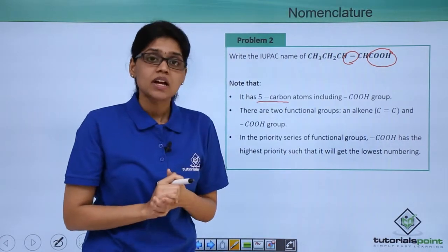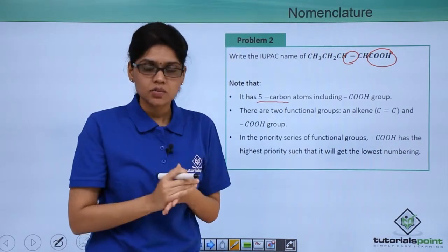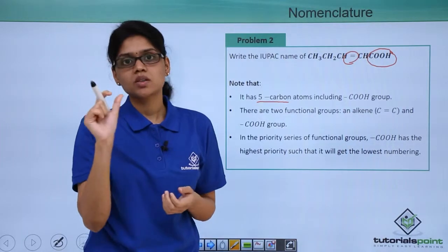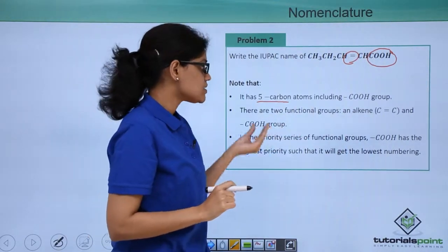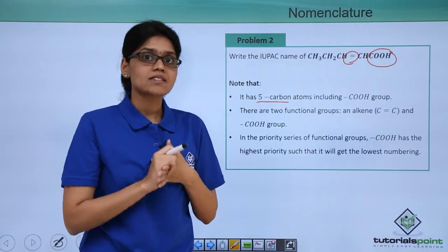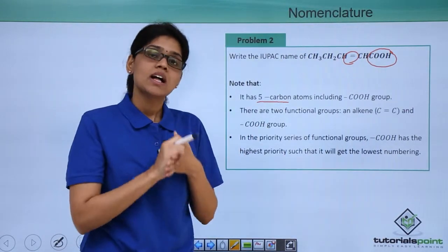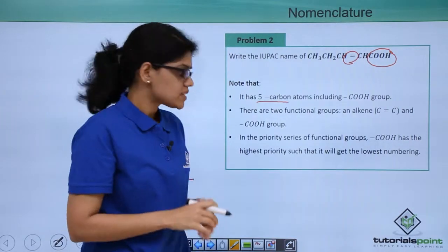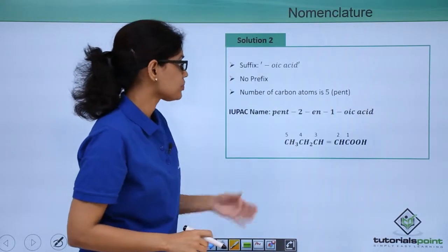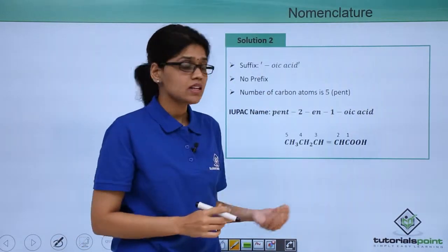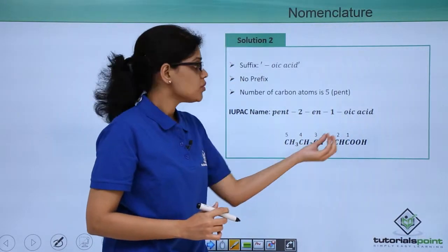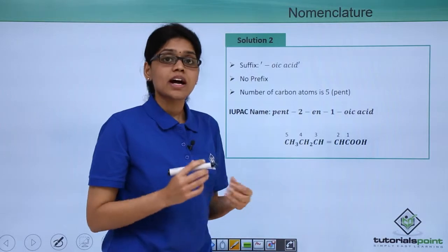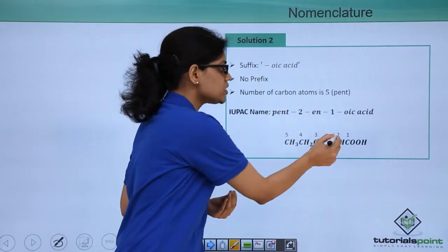Why? Because we have to remember that numbering is done in such a way that the principal functional group will get the lowest number. In this case, out of alkene and COOH group, COOH has the highest priority and therefore that will act as a principal functional group. Let's see how to do the numbering in this. Based on that, we can see that numbering would be 1, 2, 3, 4, and 5, where 1 goes to COOH and the alkene is numbered at position 2.